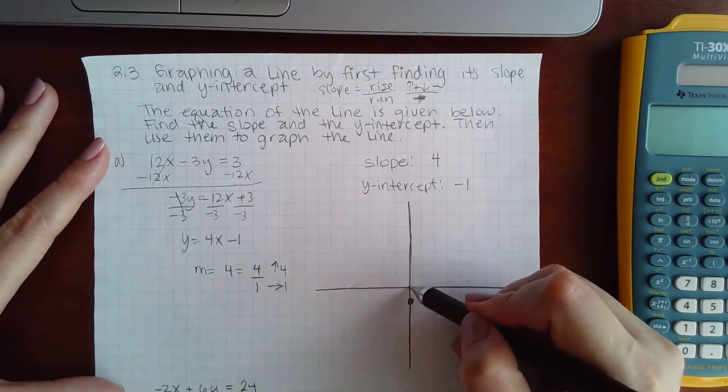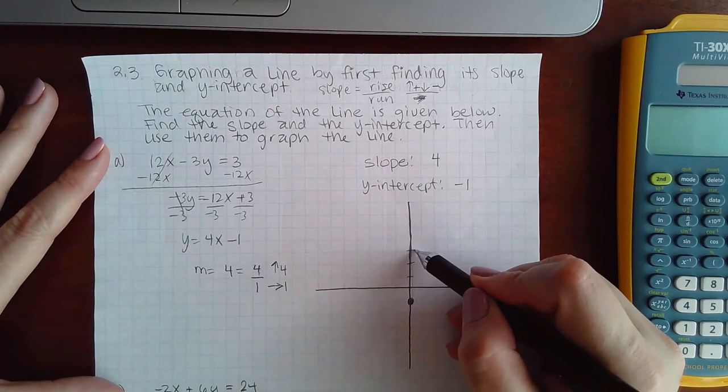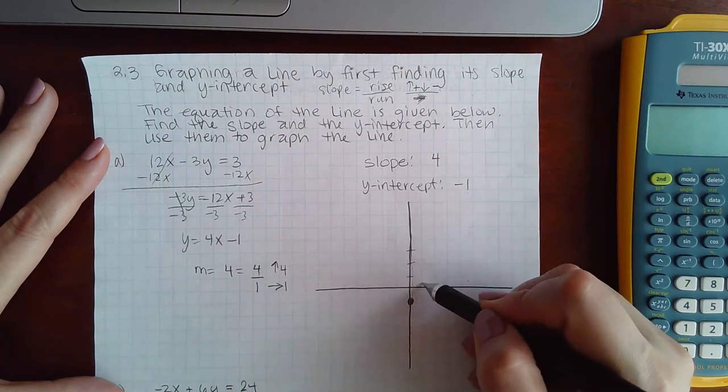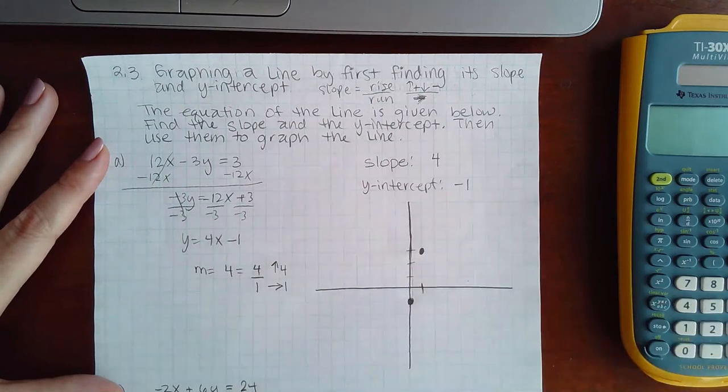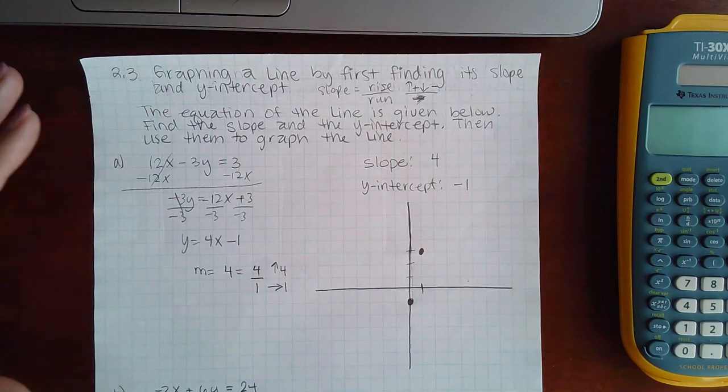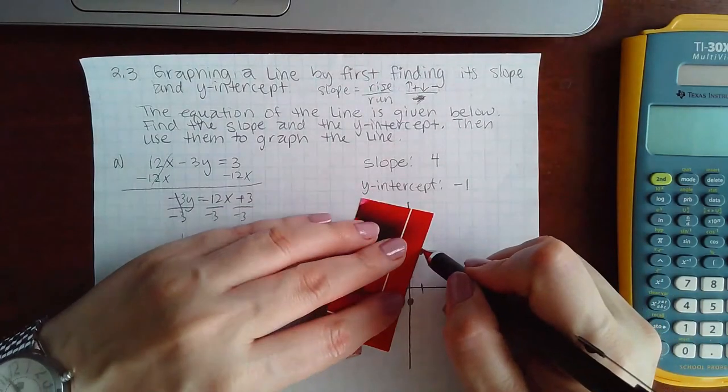From there I'm going to go up one, two, three, four, and then go over to the right one, and I land here at this point (1, 3). That's all you need.